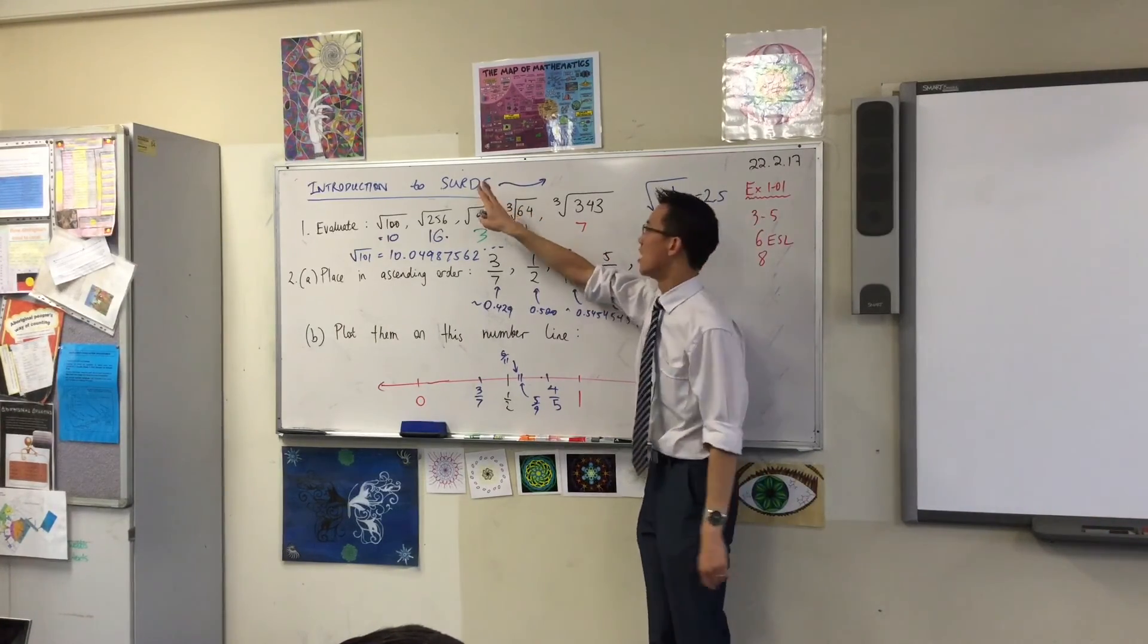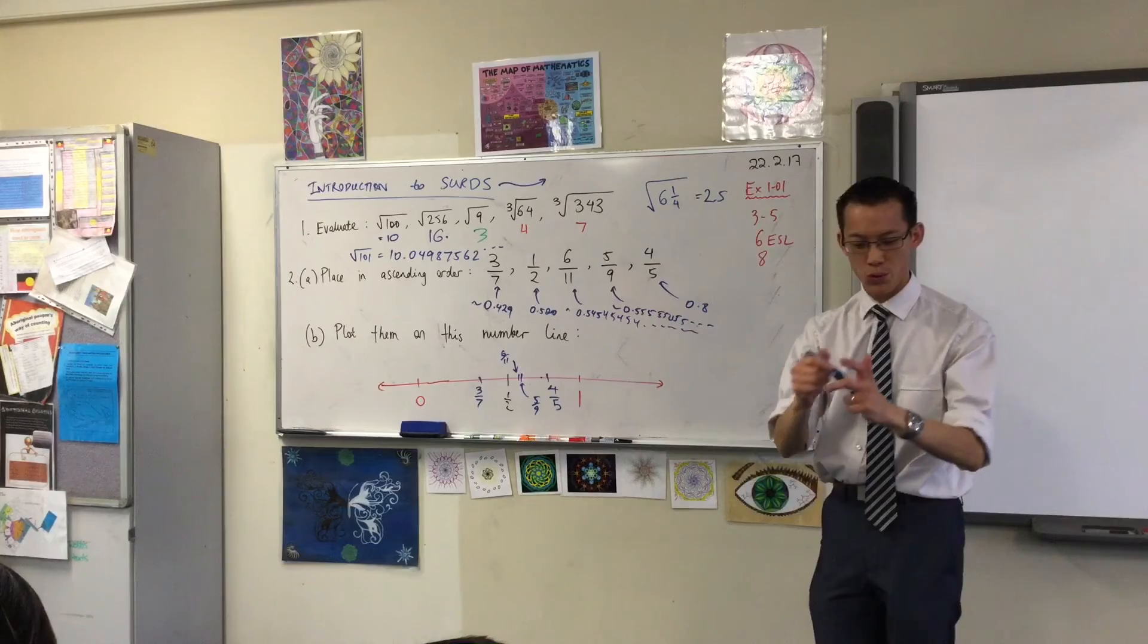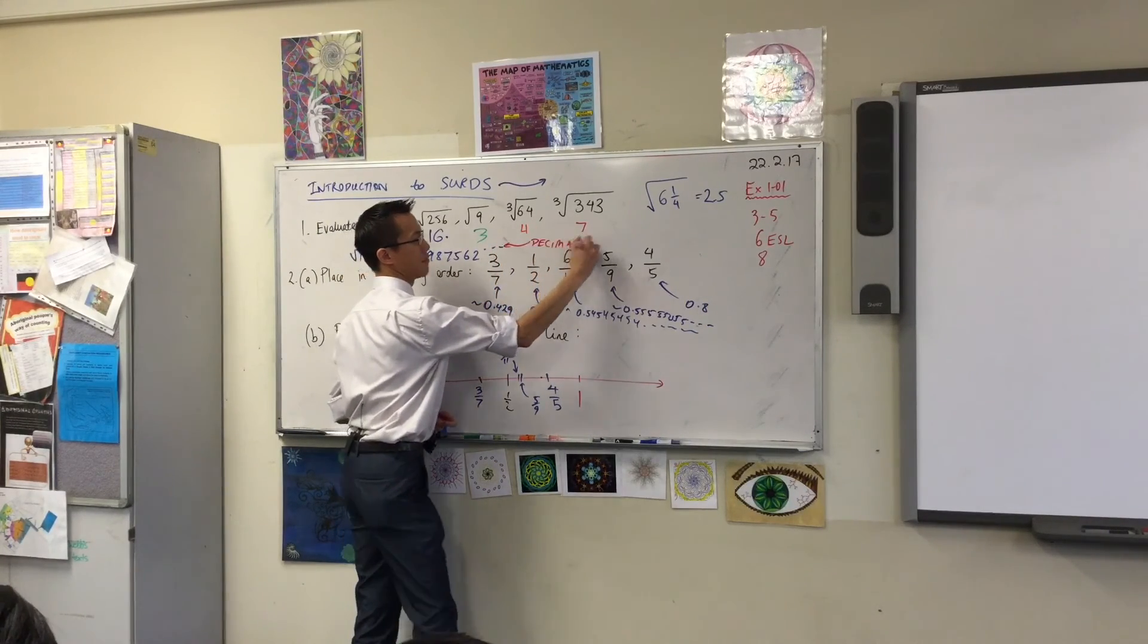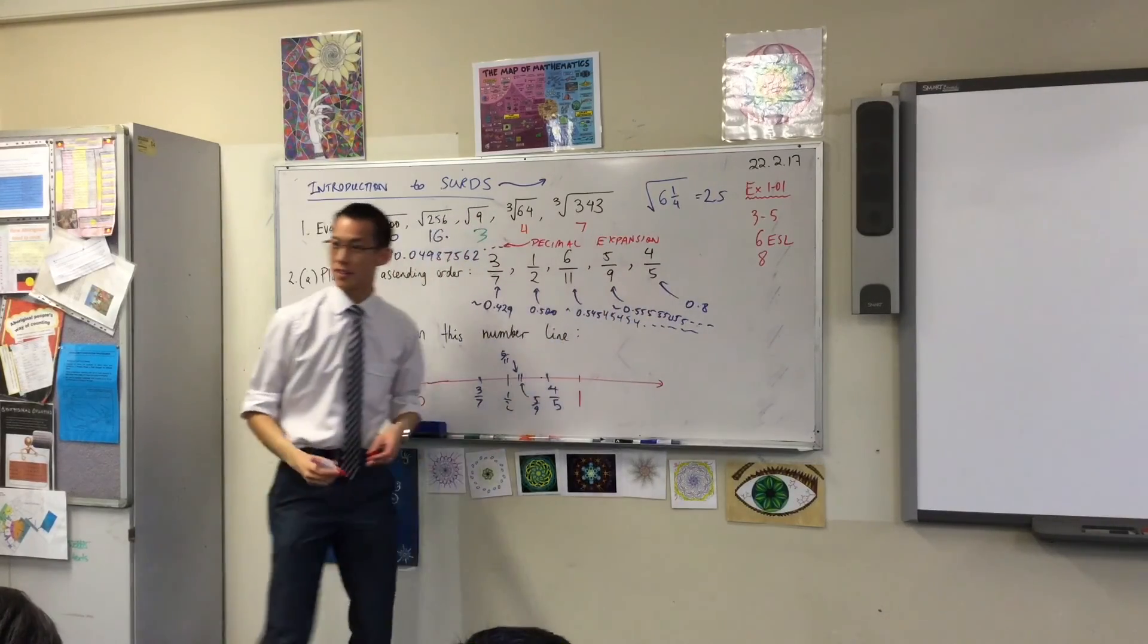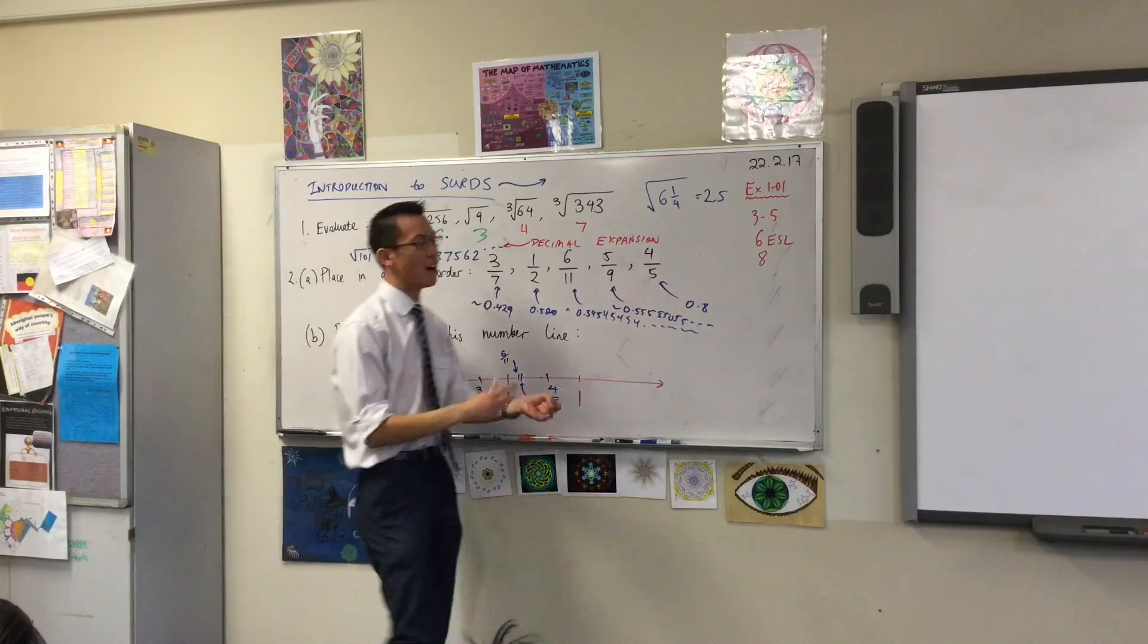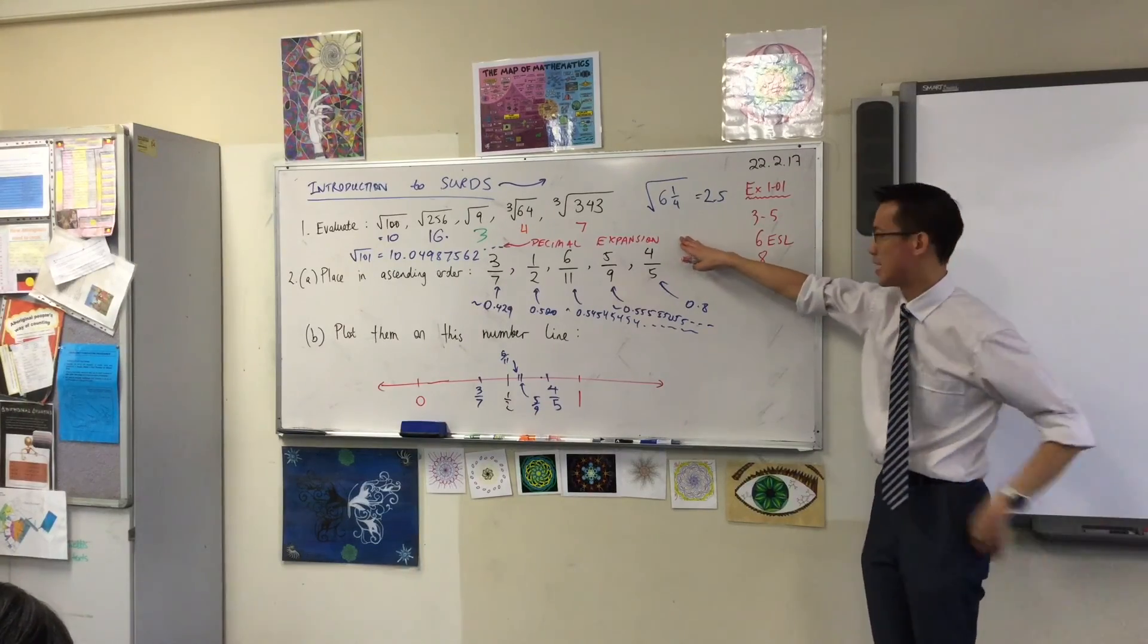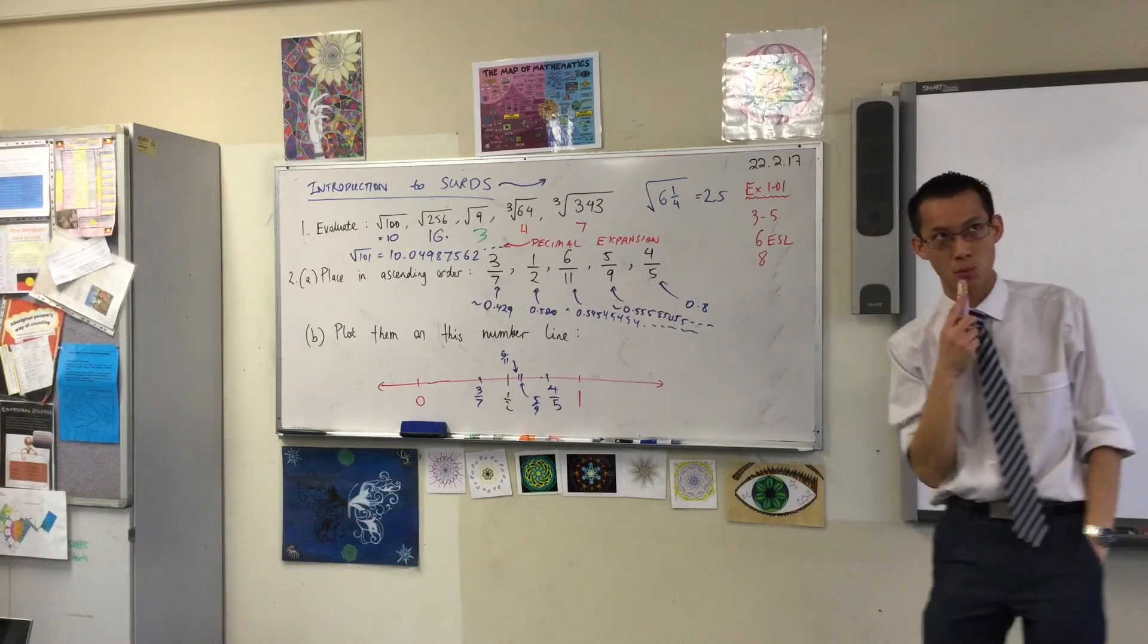Let me say that again in case you missed the sentence. Our definition for a surd is a square root, or a cube root, or any kind of root whose decimal expansion, that's what this thing is, we convert it to a decimal, that's what your calculator helps you understand, whose decimal expansion never repeats. A surd is a square root, or a cube root, or any kind of root whose decimal expansion never, ever repeats. And that's really weird. That's why they're their own topic that we're going to look at over the next week and a half.